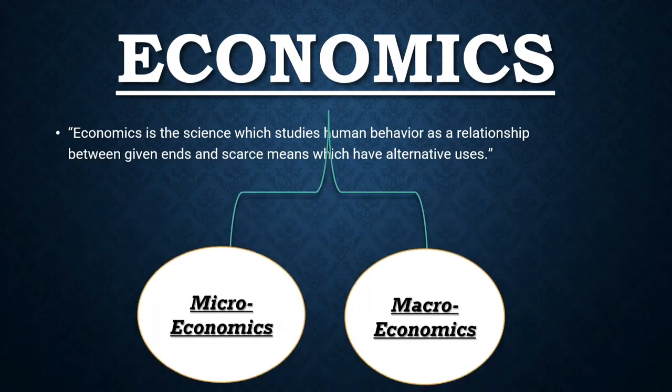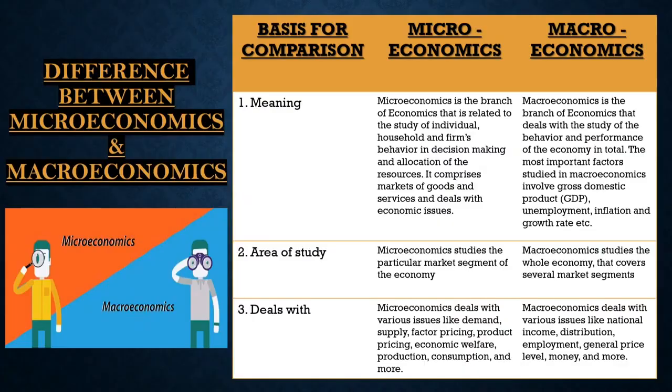They are mostly concerned with the production, distribution, and consumption of goods and services. Economics is divided into two important sections: macroeconomics and microeconomics. Let's start the differentiation between these two terms. I will differentiate the topics with the help of bases. Our first base for comparison is meaning.